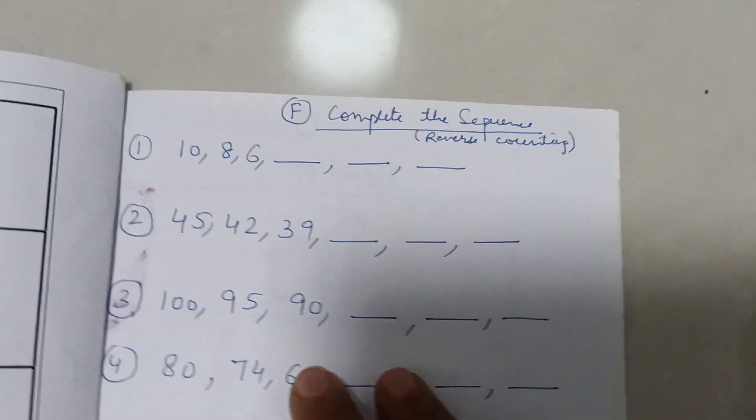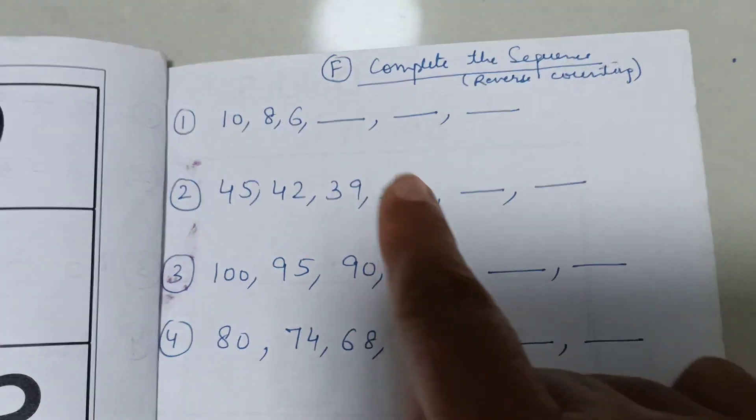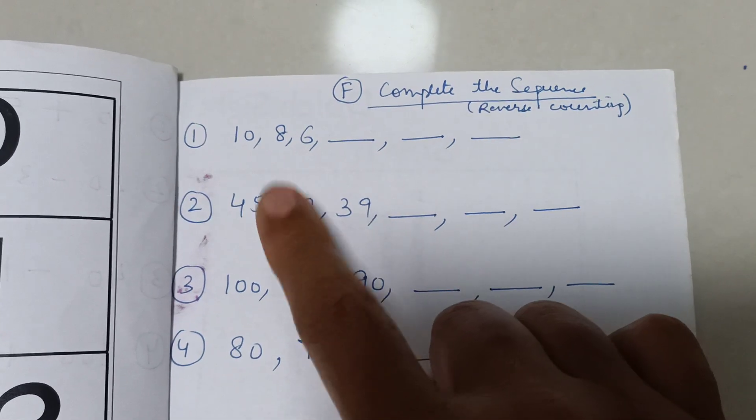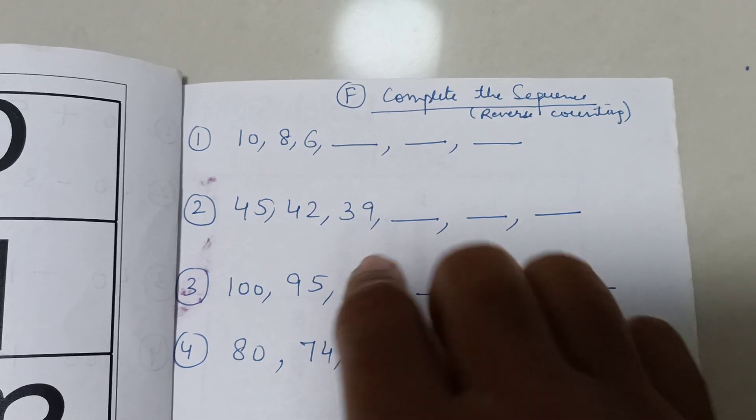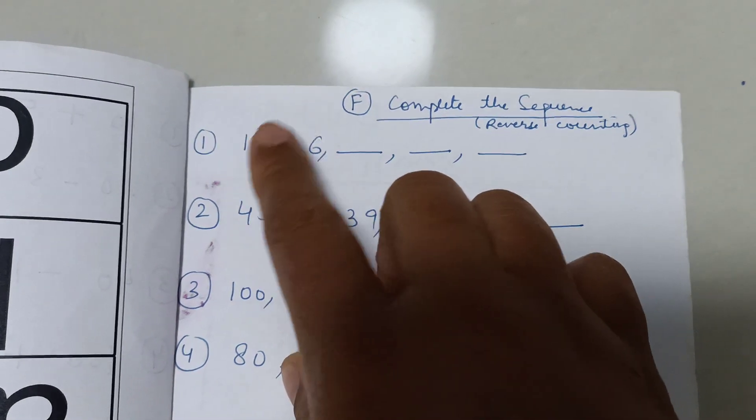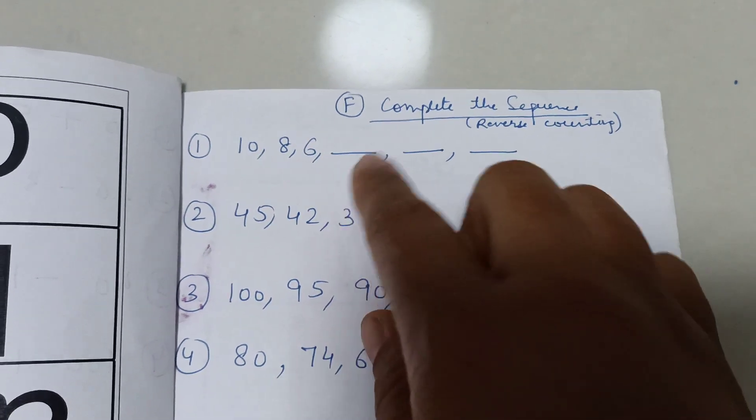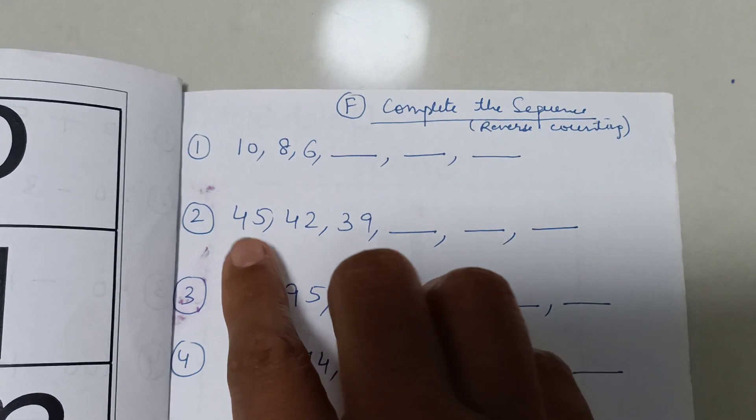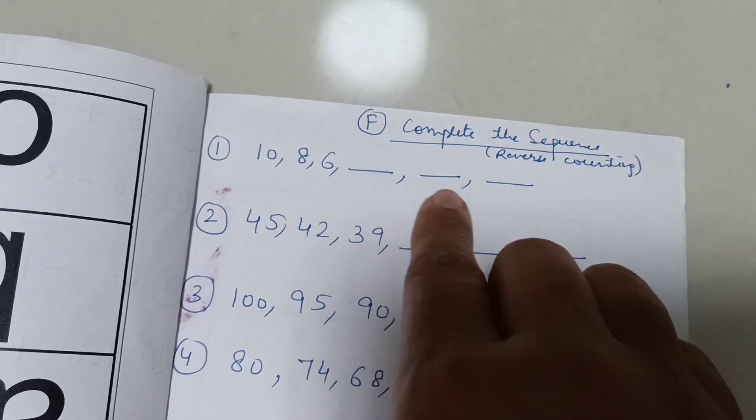And this one, last one, complete the sequence. Here we are practicing reverse counting. And again reverse subtraction because my girl struggles with them. Like 10, 8, 6, 4, 2, 0. Now this is simple because it's just subtracting 2.